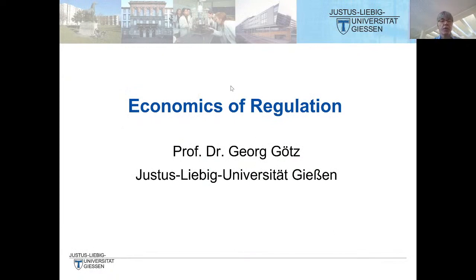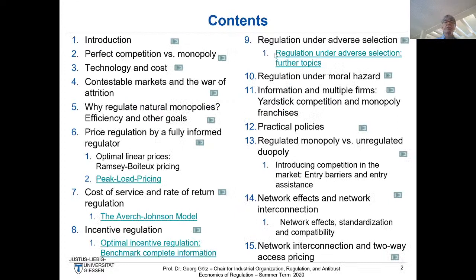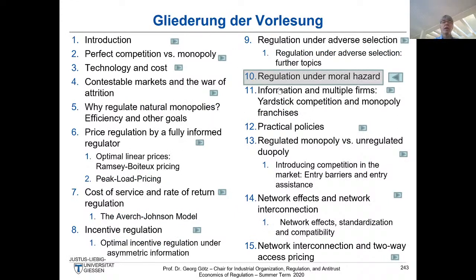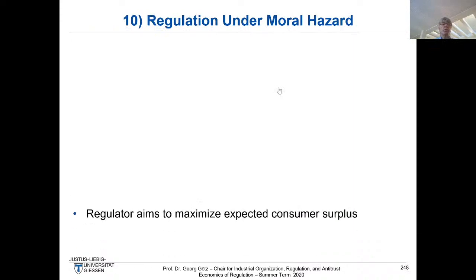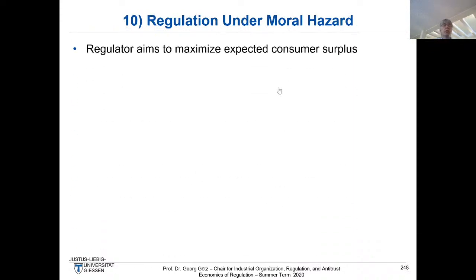Welcome back to our Economics of Regulation course. We are in the midst of the discussion of regulation under moral hazard. The starting point of all this discussion is that the cost of a firm depends stochastically on the effort of the firm and its managers. As a consequence, the regulator, even though she can observe whether the firm has high costs, doesn't know whether the costs are high because the firm didn't work hard or because there was an adverse environmental shock.